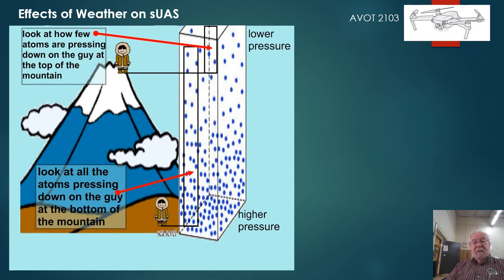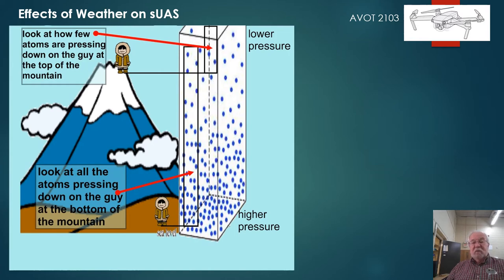When we say higher pressure, we're talking about atmospheric pressure. As you can see in the little picture of the molecules, atoms are pressing down on the person at the bottom of the mountain — the molecules are closer together. As we increase the temperature, a similar thing happens: the air molecules are bumping around faster and they move further apart. Air gets thinner as temperature increases, which affects performance because thinner air has lower pressure, so propeller blades or wings have to work harder to produce the same lift.